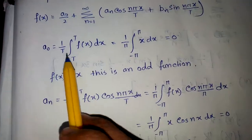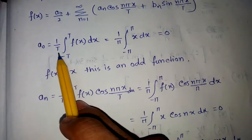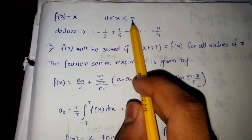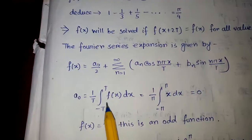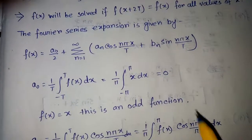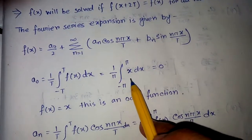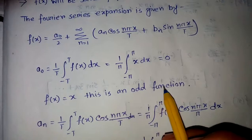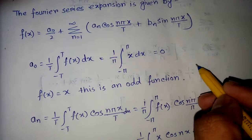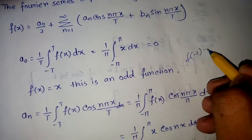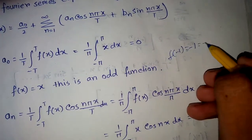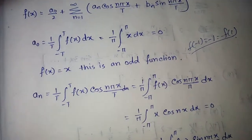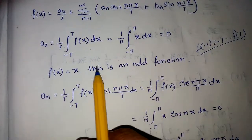To calculate a-naught, the formula is 1/t times the integral from minus t to t of f(x) dx. Here t is replaced by pi, so the interval is minus pi to pi and f(x) = x. This gives us 1/pi times the integral from minus pi to pi of x dx, which equals zero, because f(x) = x is an odd function — f(minus 1) = minus 1 = minus f(1).